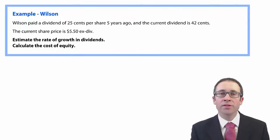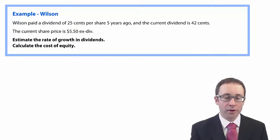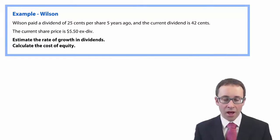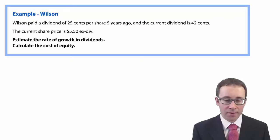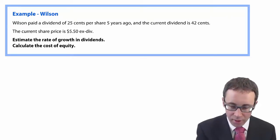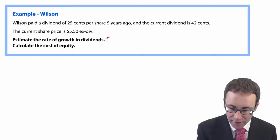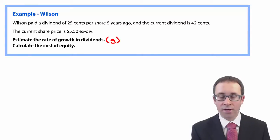Let's go through the example called Wilson in the notes. There are two parts to it. The first asks you to work out the rate of growth in dividends — that is, to work out G.